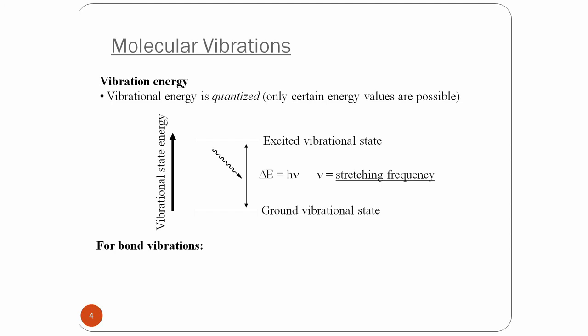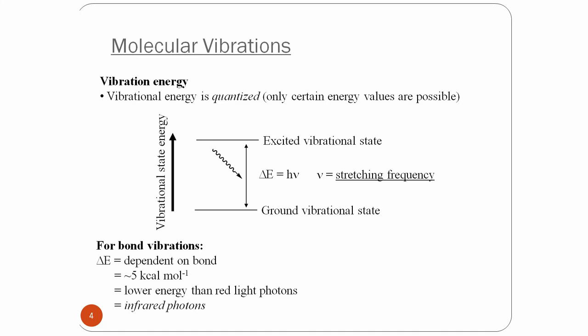For bond vibration, delta E depends on the type of bond between the two atoms. It requires a minimum of 5 kilocalories per mole of energy. IR will supply this much energy to cause excitation. This energy level is less than that of red light we see in daily life, and infrared photons are applied here for this excitation.